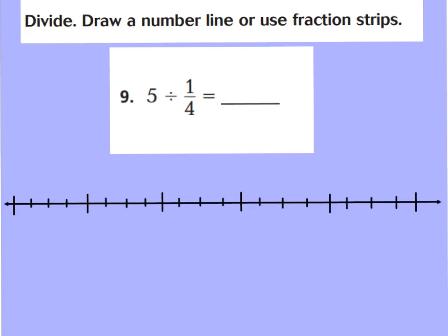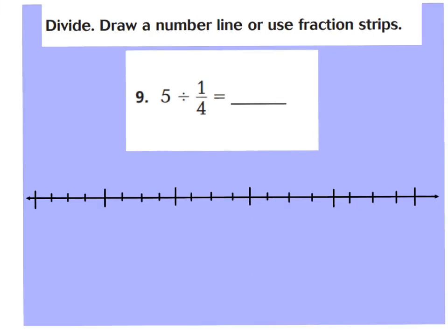Now for number 9, I went ahead and made a number line for this. So what I want to do is, let's move down to number 9. For number 9, it says 5 divided by 1/4 equals... The direction says to draw a number line or use fraction strips. I chose to use a number line. Now I went ahead and drew my number line. And if you'd like to do this along with me, you can or you can just watch how I do it.